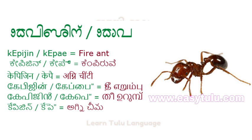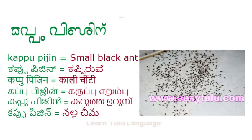Kepijino or Kep Ai means Fire Ant. Kuppu Pijin means Small Black Ant.